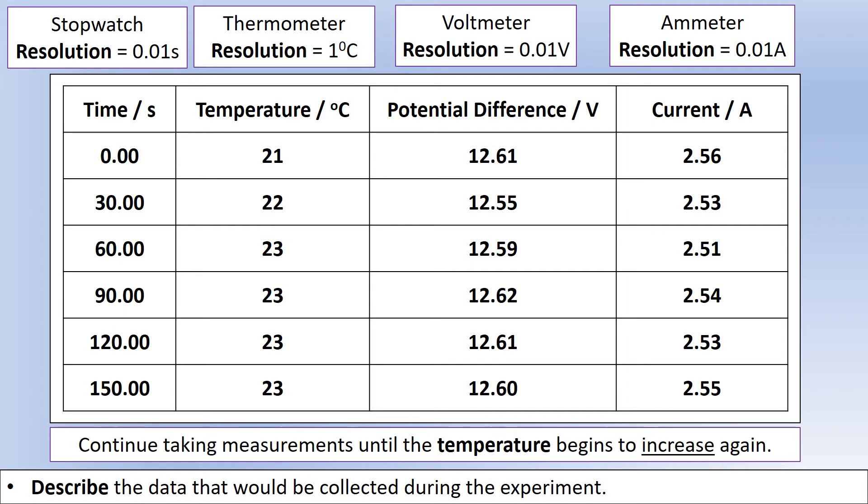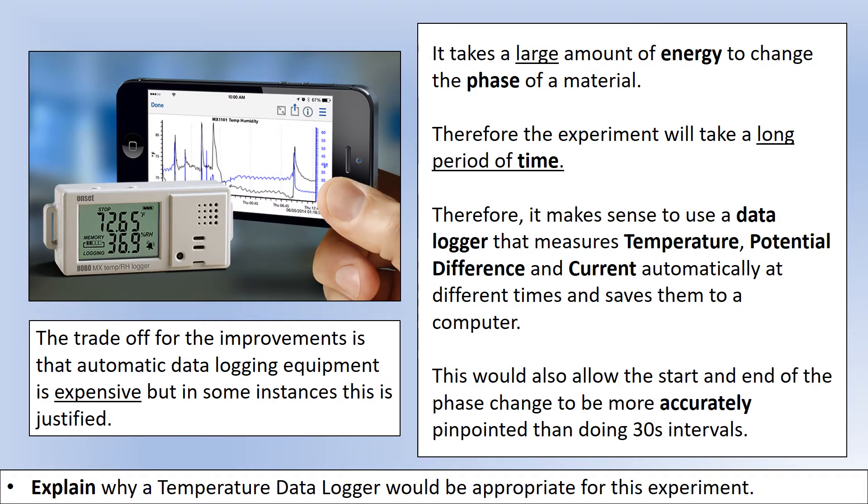Some better equipment to use here I think would have been a thermometer with a data logger. The reason for that is it would allow us to take measurements more frequently. So we could have measurements every second instead of every 30 seconds. And it also means that they're all recorded at exactly the same point in time. So our potential difference, current and temperature would all be recorded at exactly the same time. And we can have them more frequently, which would be beneficial for identifying the specific time that it starts and ends melting.